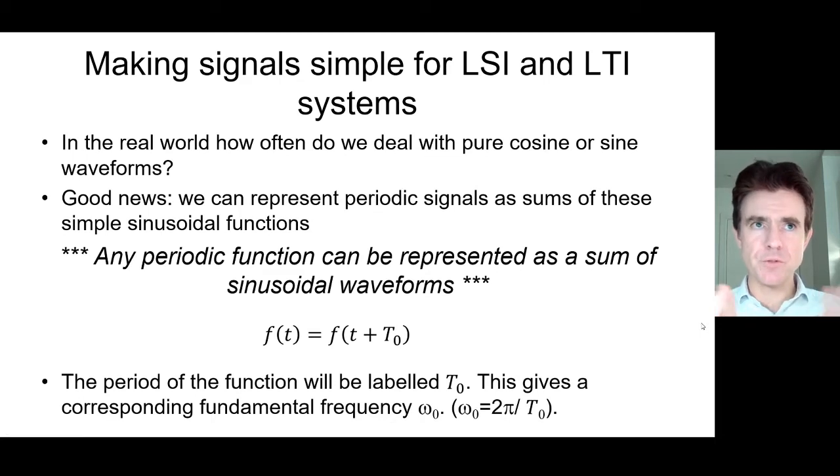Now the point is, in the real world, it's all very well showing sinusoids, but how often do we really come across pure cosine or sine waveforms? Well, this is the rather radical statement: we can represent any periodic signal as a summation of those simple sinusoidal functions. So this is the definition of periodicity - whatever that function is, it might look nothing at all like a sine or a cosine, but it can be periodic nonetheless, repeated from minus infinity to plus infinity, and it will have some fundamental period t0.